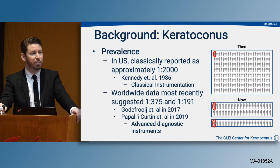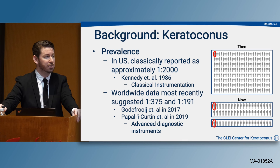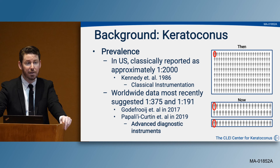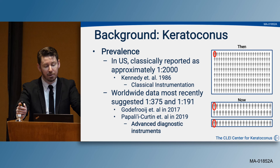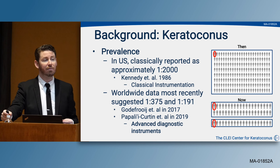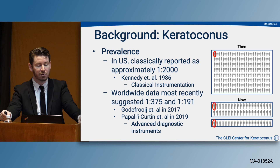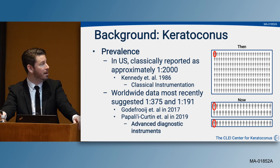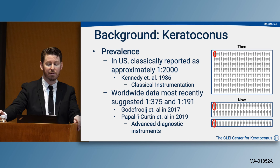The prevalence in the United States has been classically reported as 1 in 2,000 individuals. However, that was reported as of 1986 in a Kennedy study which used classical instrumentation — slit lamp findings, scissor reflex on retinoscopy, and keratometry on an old-school keratometer. More recent worldwide data suggests prevalence is more like 1 in 375, or even as low as 1 in 191, from studies out of the Netherlands and New Zealand respectively. These differences are attributed to advanced diagnostic instrumentation not previously available.